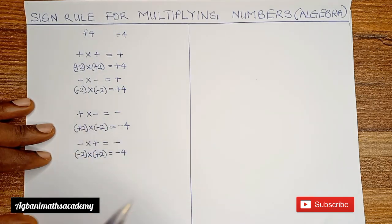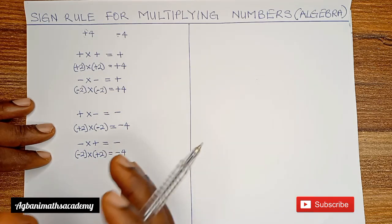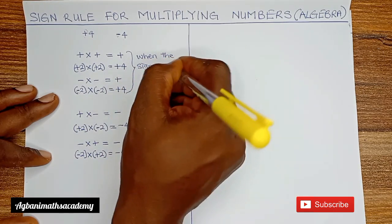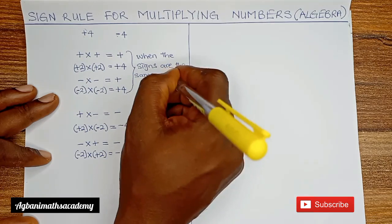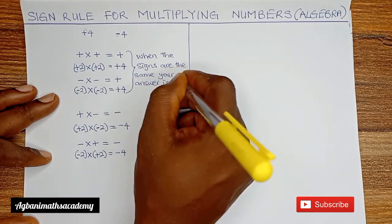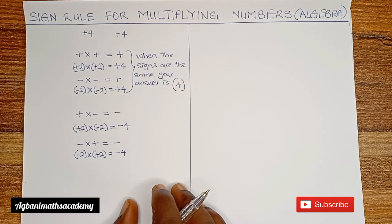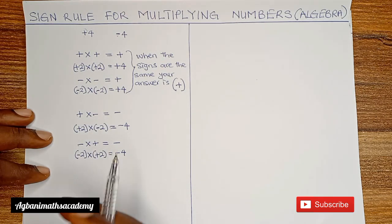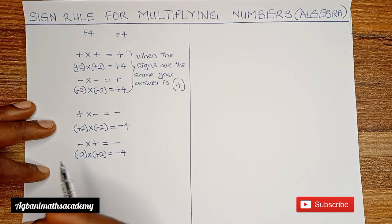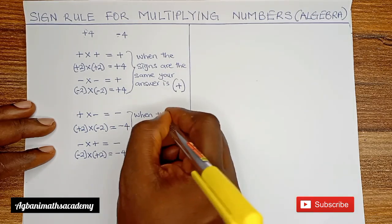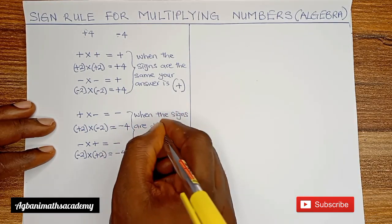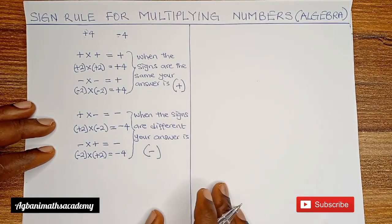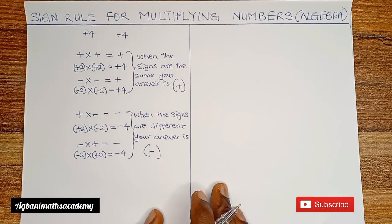From the first two situations — plus multiplied by plus and minus multiplied by minus — we observe that when the two signs you're multiplying are the same, your answer is positive. From the second group — plus multiplied by minus and minus multiplied by plus — the summary is: when the signs are different, your answer is negative. So when you follow this process, you'll be able to multiply numbers or algebra very easily.